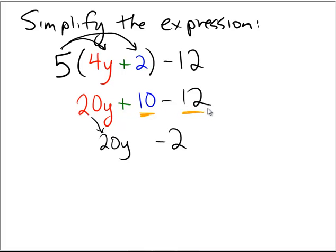And then the positive 10 minus 12, or the plus 10 minus 12, becomes the quantity minus 2, which is lopped onto the end here. These, of course, cannot be simplified or combined either, because one has a variable and one does not.